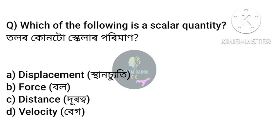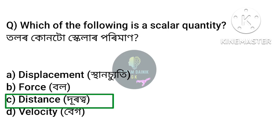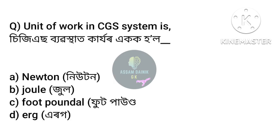Which of the following is a scalar quantity? — Anchar Option C: Distance. Distance is a scalar quantity.